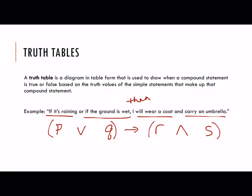So now, is this a true or false statement? Well, it depends on quite a few things — is it raining, is the ground wet, are you wearing a coat, and are you carrying an umbrella? We want to examine all of those possible cases. For example, is it a lie if it is raining but the ground is not wet, and you do wear a coat but do not carry an umbrella? Or what about if it is raining and the ground is wet and you don't wear a coat but you do carry an umbrella? Or maybe it's not raining and the ground is wet, and so forth.